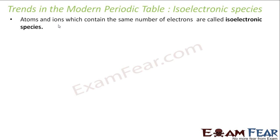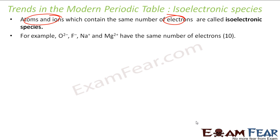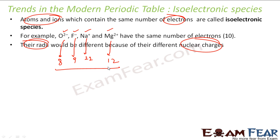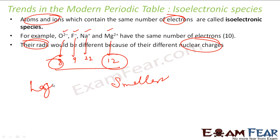Now we will understand isoelectronic species. Atoms and ions with the same number of electrons are called isoelectronic species. An example of isoelectronic species is O²⁻, F⁻, Na⁺, Mg²⁺ — they all have 10 electrons. But their size will vary because their nuclear charge is varying. Each of these has different numbers of protons: oxygen has 8, fluorine has 9, sodium has 11, magnesium has 12. So the size will also vary. The one with more protons will be smallest, and the one with fewer protons will be larger.